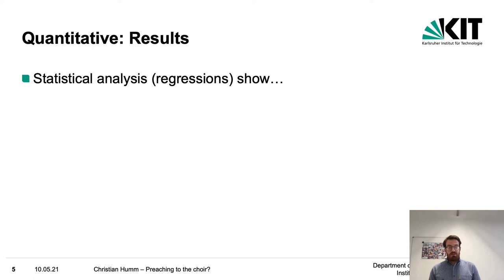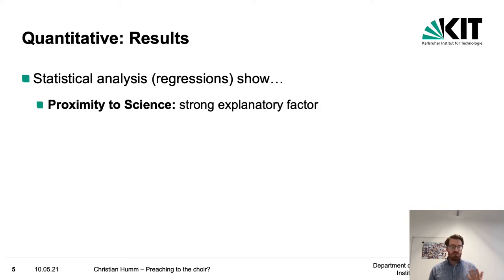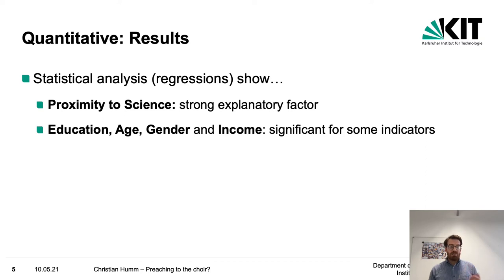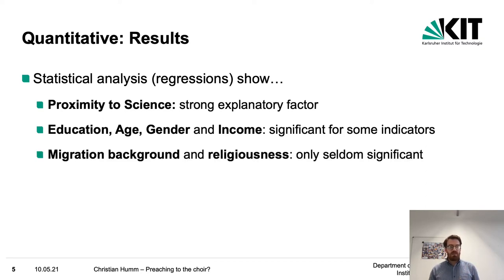Statistical regression analysis shows that proximity to science — that is, knowing a scientist or working in science — is a strong explanatory factor. Education, age, gender, and income are also significant for some indicators. In contrast, migration background and religiousness are only seldom significant, which might be a bit surprising.